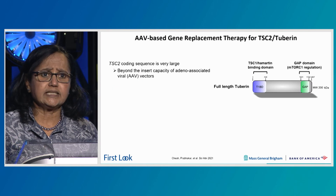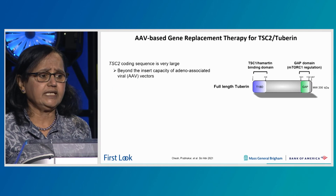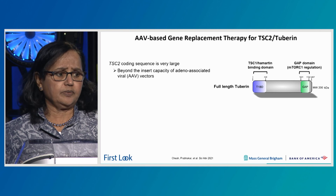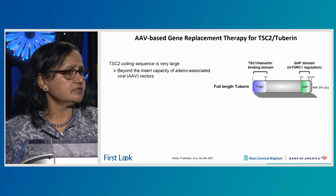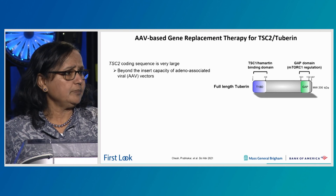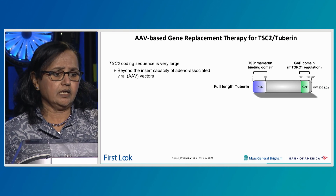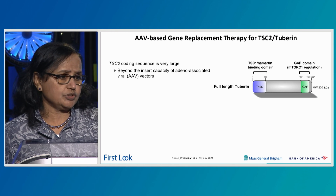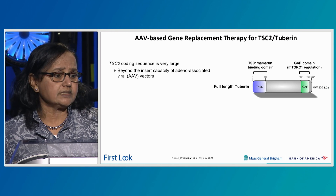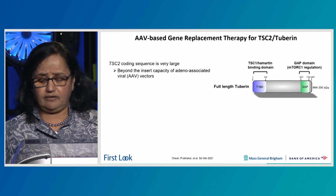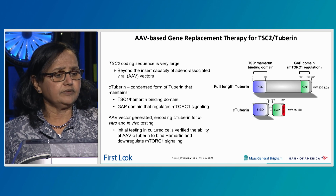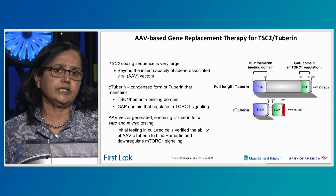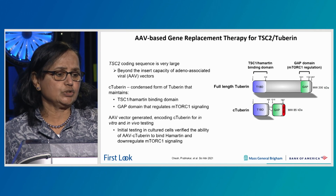Therefore, Xander's lab, myself, and Casey decided to take the approach of gene therapy for TSC. But the gene is very big — 5.4 kb of cDNA encoding an approximately 200 kilodalton protein — which is beyond the insert capacity of the AAV vector. Therefore, we designed a novel strategy to have a condensed form of TSC2.